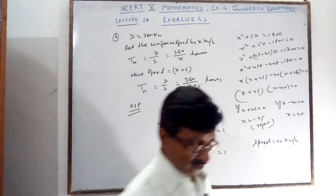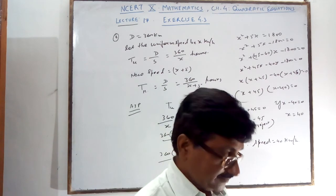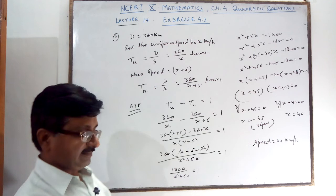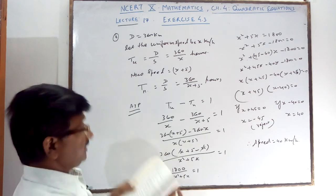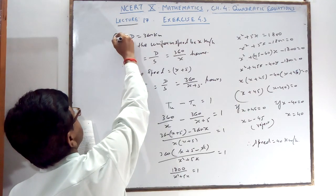So the usual speed of the train is equal to 40 km per hour. That is your question number 8, which is now over.